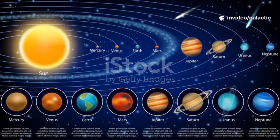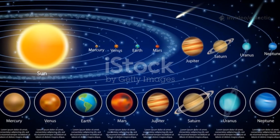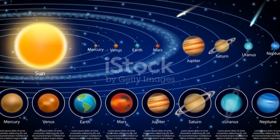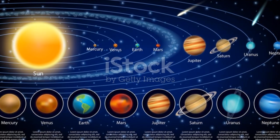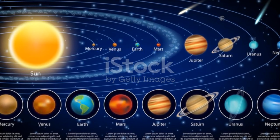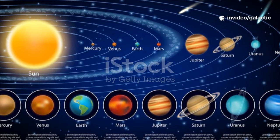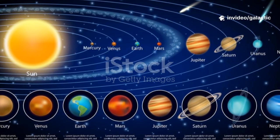The edge of the solar system isn't a solid wall. It's a shifting, invisible frontier sculpted by the power of our sun. Unlike the borders we draw on maps, this boundary is dynamic, constantly changing as the sun breathes and the galaxy pushes back.